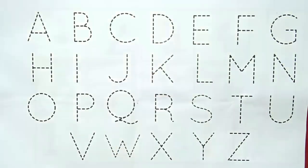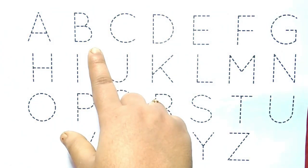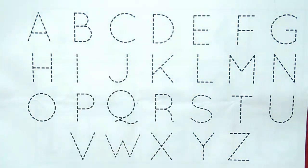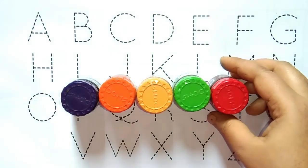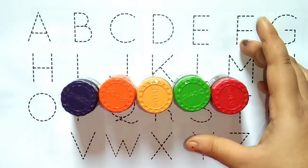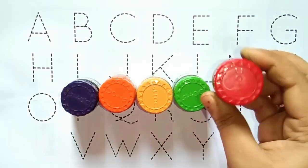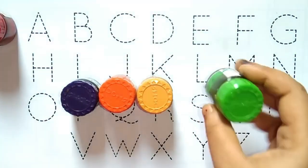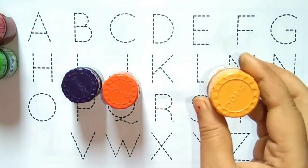Hello Kids, Hello Kids! Swagat hai aap sabhi ka is new video mein. Is video mein hum sikhenge A for Apple, B for Butterfly. To chaliye, let's start our video. What is our colors? This is red color. This is light green color. This is yellow color.